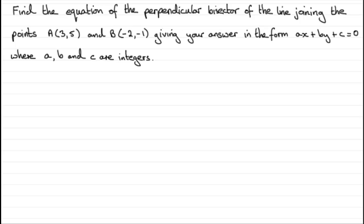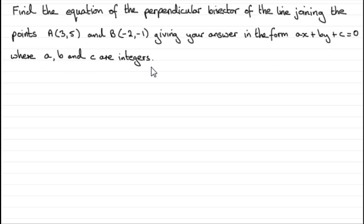Hi. Now I've got an example here that I think is very useful if you're doing coordinate geometry. It illustrates lots of points. What we've got here is: find the equation of the perpendicular bisector of the line joining the points A with coordinates (3, 5) and B with coordinates (-2, -1), giving your answer in the form Ax + By + C = 0, where A, B and C are integers.